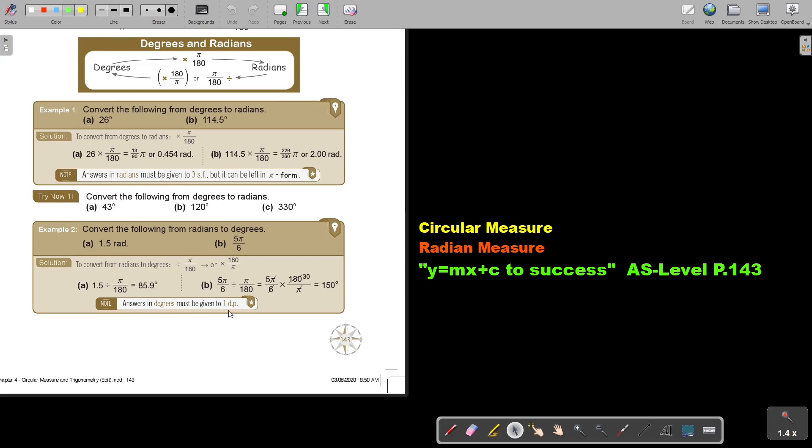We always approximate to one decimal place but I want you to test this. Just press it on your calculator so you can see it yourself. So 1.5 multiply bracket 180 divide π, the real π not the approximated one, and you will also get 85.9 degrees.